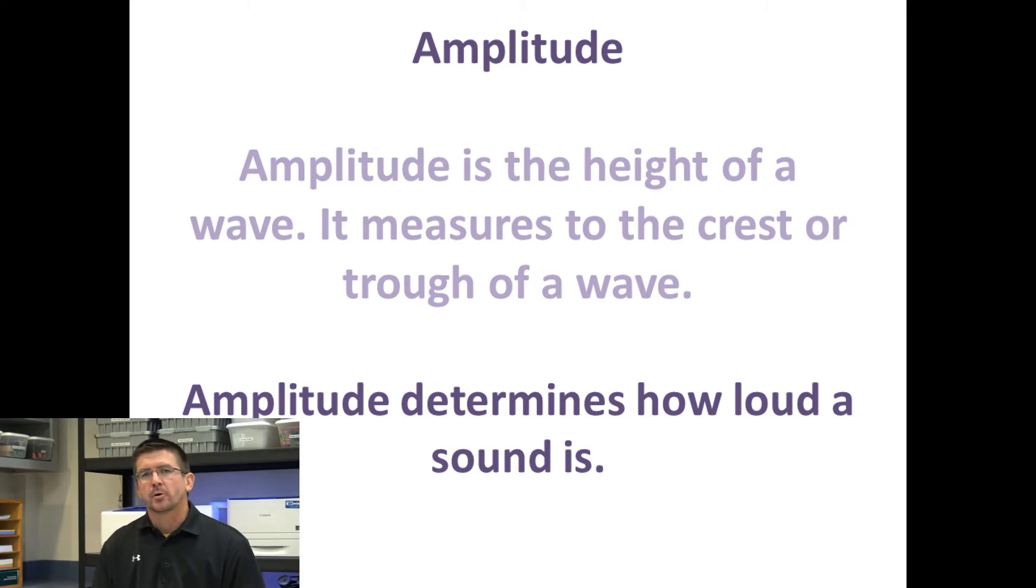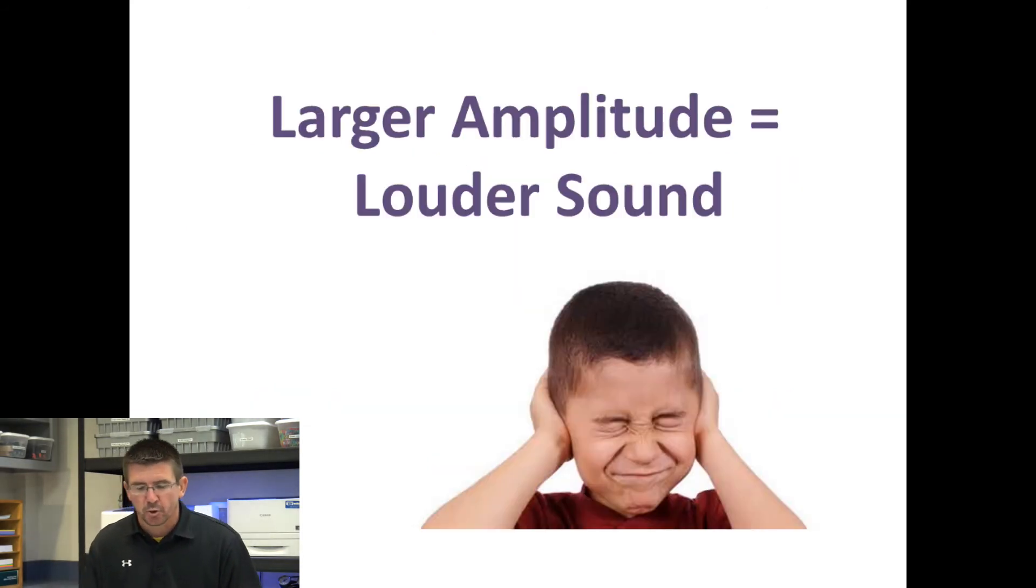The second important feature of the sound wave that affects how we hear the sound is something called amplitude. And amplitude is just the height of the wave. So when we look at our sound wave, it measures from the top of the crest downward to the bottom of the trough. So wavelength would be the horizontal measurement of the wave. Amplitude would be the vertical measurement of the wave. And amplitude of the sound determines how loud the sound is. So the greater the amplitude, the louder the sound would be.